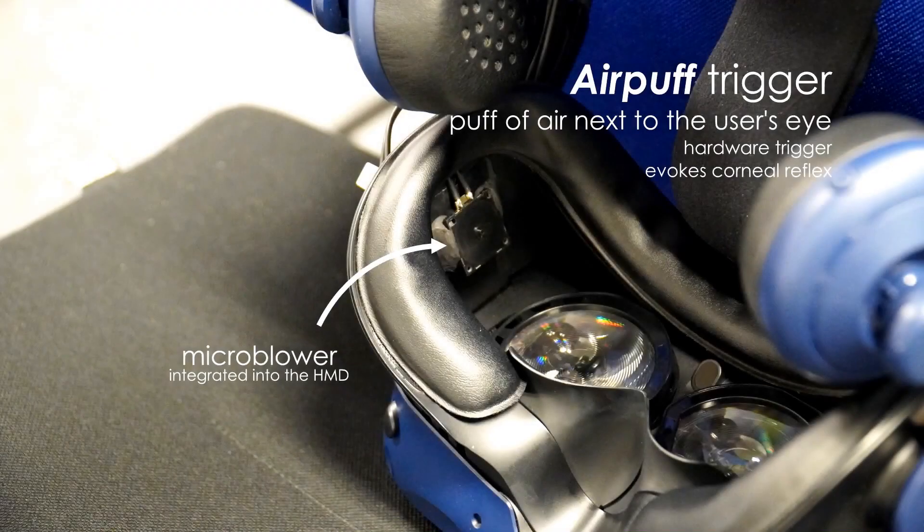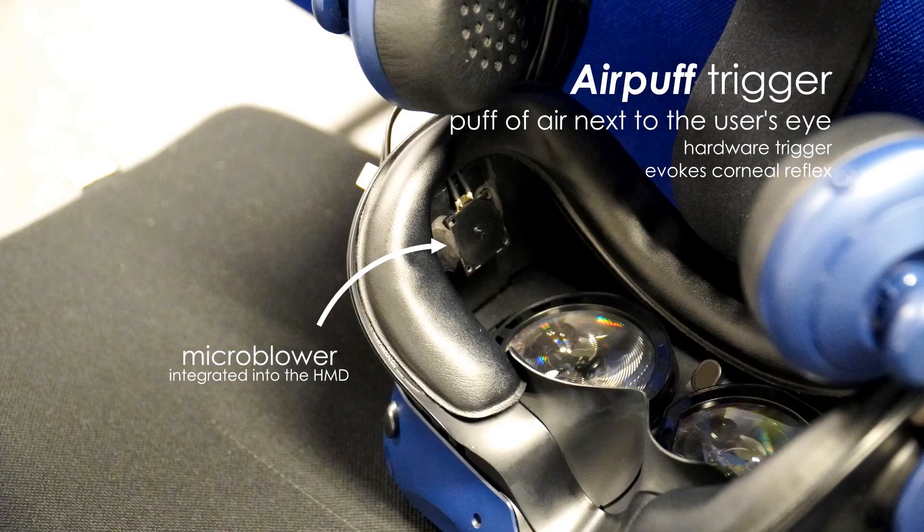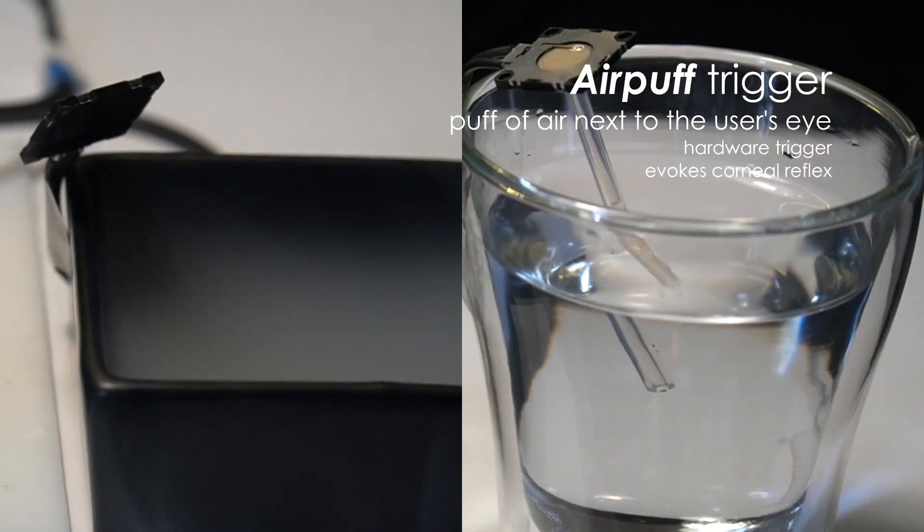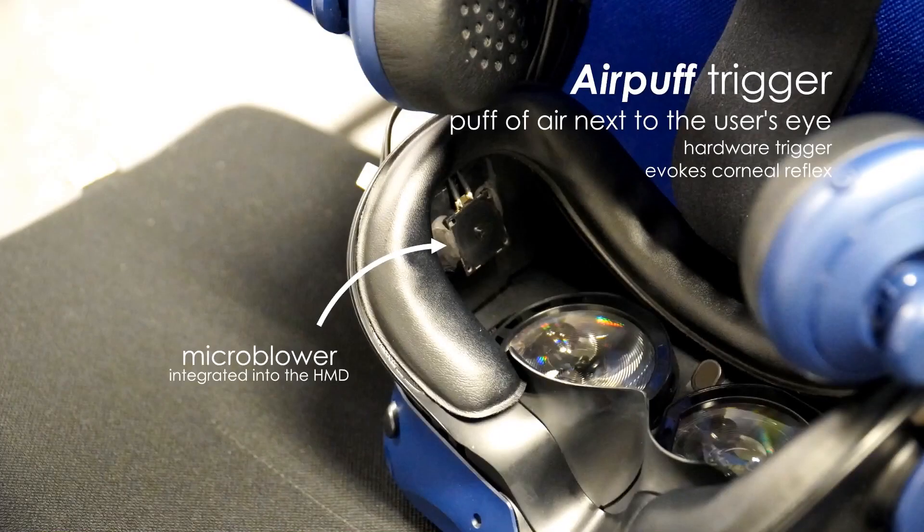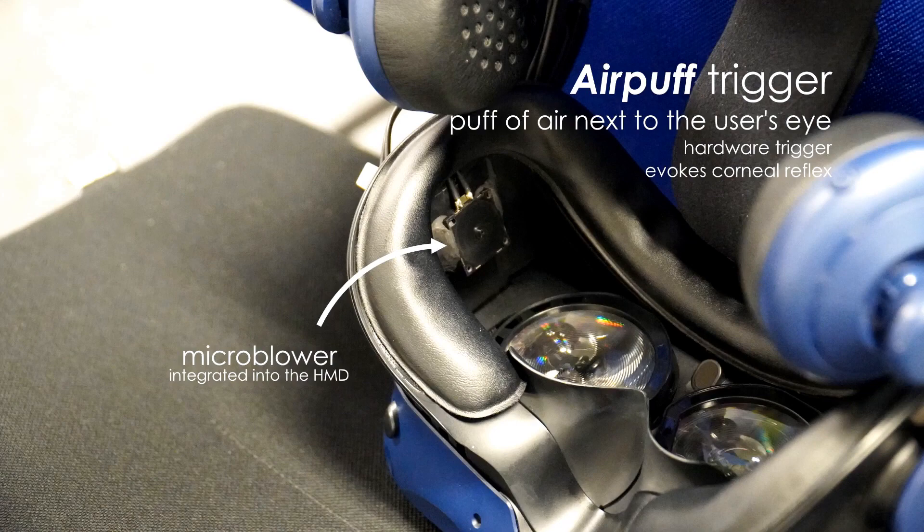And finally, we also considered a hardware-based AirPuff trigger that makes use of the Corneal Reflex. This trigger stimulates the cornea with a gentle puff of air blown next to the user's left eye to trigger a blink reaction in both eyes. To implement the AirPuff, we integrated a microblower into the HMD.